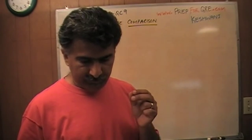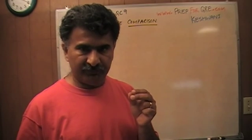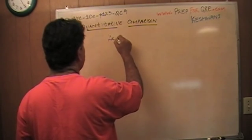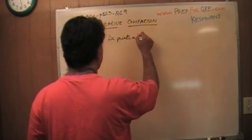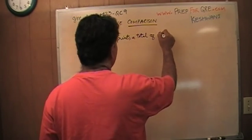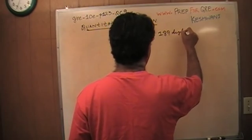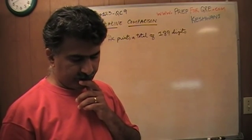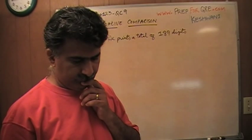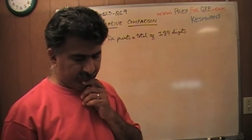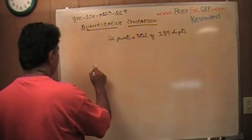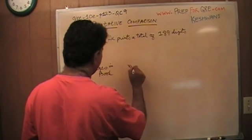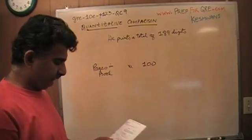The question is, in numbering the pages, we are told that in the process of numbering the pages, he prints a total of 189 digits. The question simply is, how many pages are in the book? So here we have pages in the book, versus 100. We have to figure out which one is bigger. So let's get going.